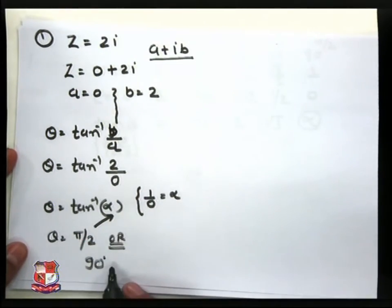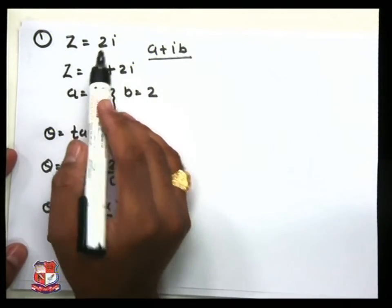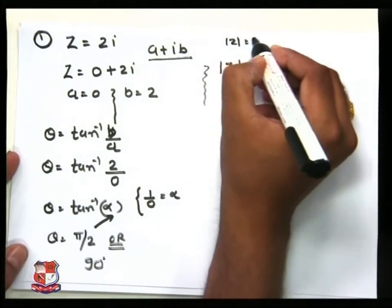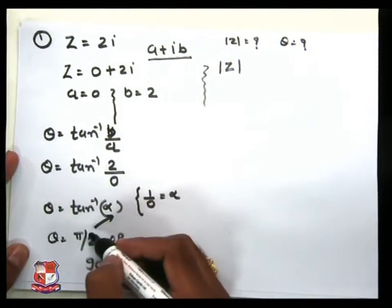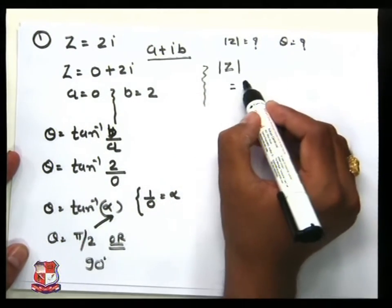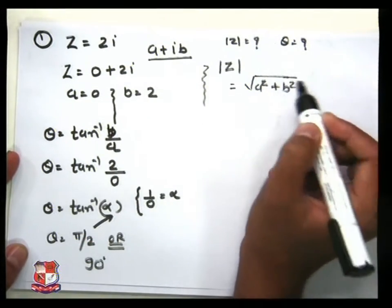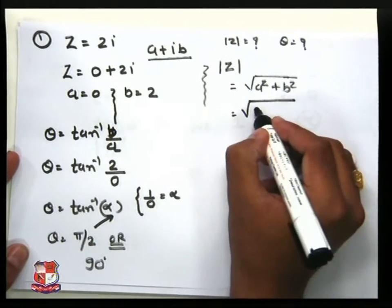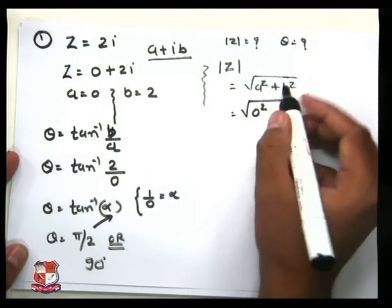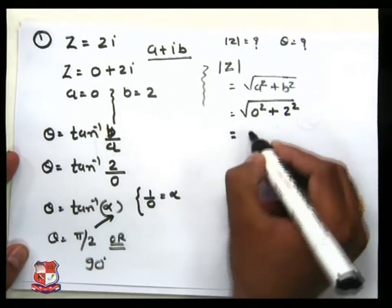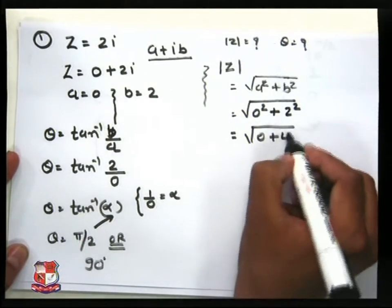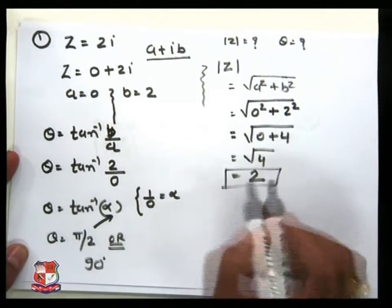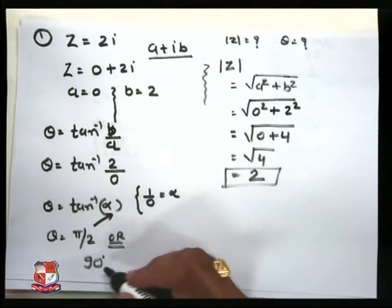Now we also want to find the modulus of z. For z = 0 + 2i, |z| = √(a² + b²) = √(0² + 2²) = √(0 + 4) = √4 = 2. So we got our two answers: |z| = 2 and the angle θ = π/2.